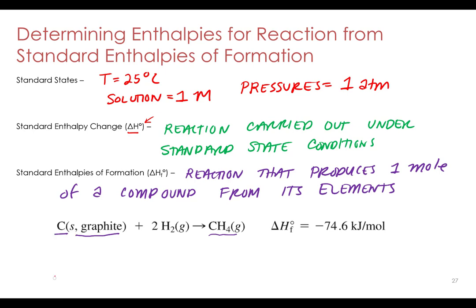When developing heat of formation reactions, it's important to remember it's always going to be one mole of your compound. Let's write the heat of formation reaction for water. We'll need hydrogen — H2, since hydrogen is diatomic — and oxygen, O2. H2 plus O2 produces water, but this isn't balanced: there are two oxygens on the left and one on the right. We can't put a 2 in front of water since we must keep it as one mole, so instead we use fractional coefficients. Multiplying oxygen by one half balances the equation and keeps the coefficient in front of water as one.